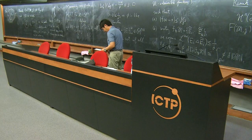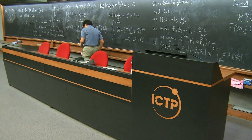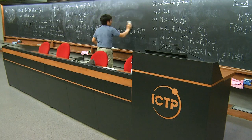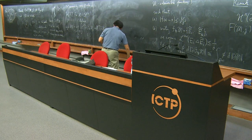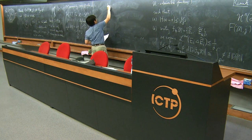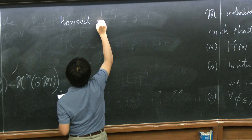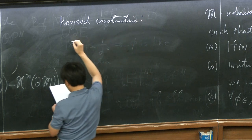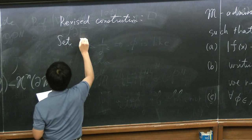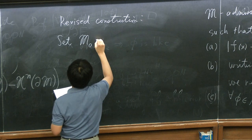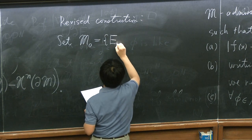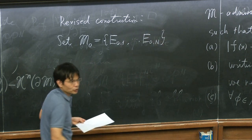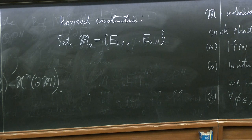Now we have everything needed to construct a discrete approximate flow. That's the revised construction. We start with the initial data: let M_0 be our initial open partition. That's the given partition at t=0.